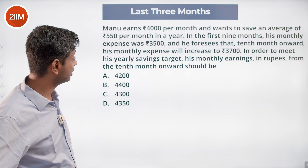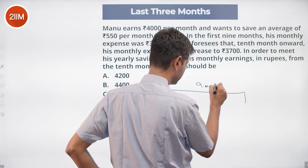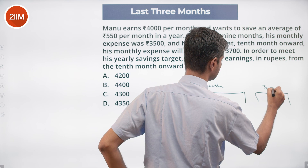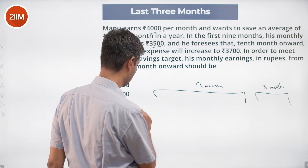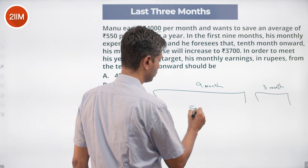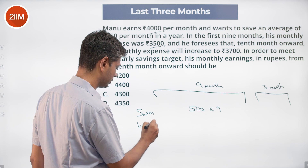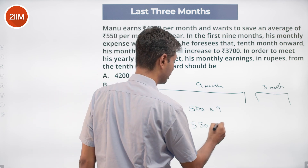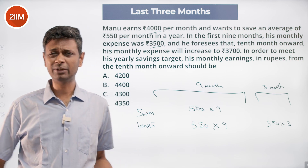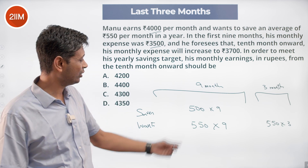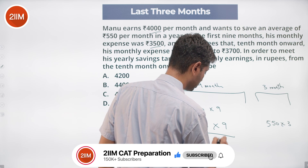For the first nine months he saves 500 per month. I'm going to break this as nine months and three months: 4,000 minus 3,500 happens for nine months, so he saves 500 into nine. He wants 550 into 12. I'll break it as 550 into nine and 550 into three. He falls short by 50 bucks each month, so the total deficit is 450 — that's 50 into nine.